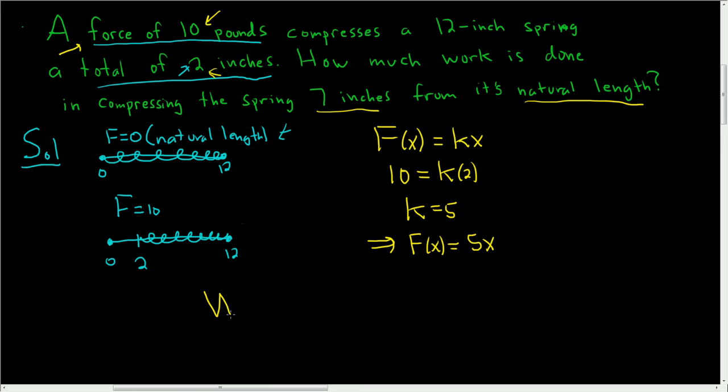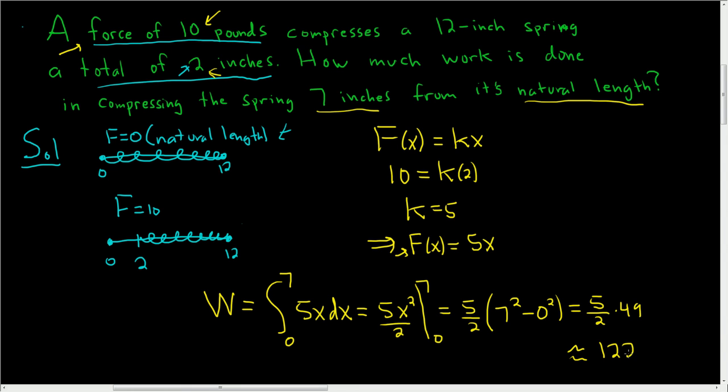So the work is the definite integral and we're going from 0 to 7 of the force function, 5x, with respect to x. And so this is 5x squared over 2 using the power rule and we're going from 0 to 7. So I'll leave the 5 halves outside. You first plug in the 7 so it'll be 7 squared minus and then you plug in the 0 so 0 squared. So this is equal to 5 halves times 49. And if you put this in your calculator you end up with 122.5 and the units here are inch-pounds.